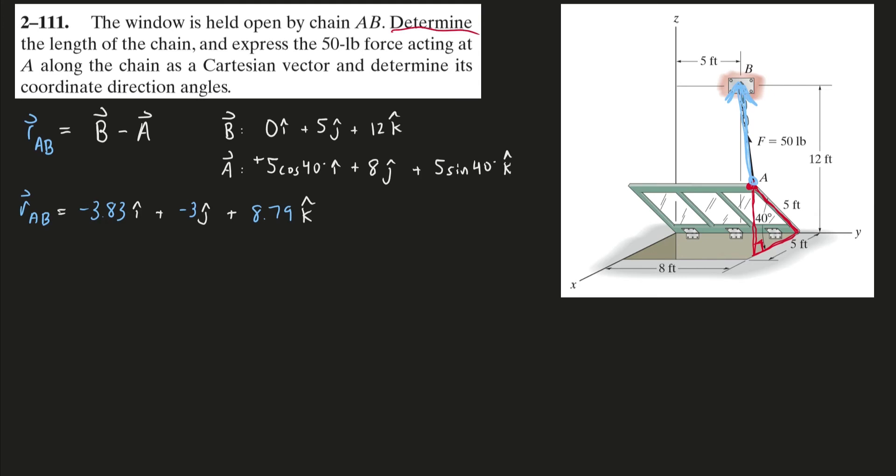So we can get the length of this chain by just calculating the length, also known as the magnitude of this vector. And we can just do that by using Pythagorean theorem, the sum of the squares of my components, and of course the square root of that. And if I crunch that math, I'll get 10.05 feet.